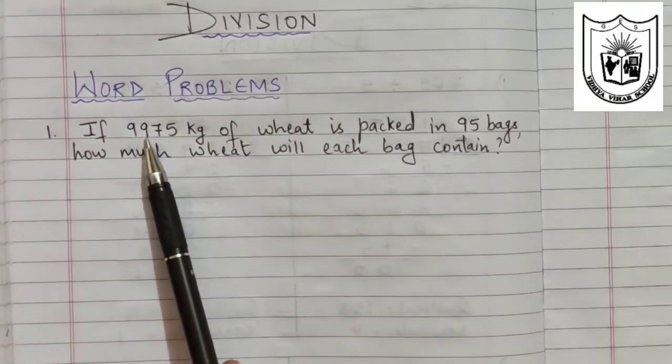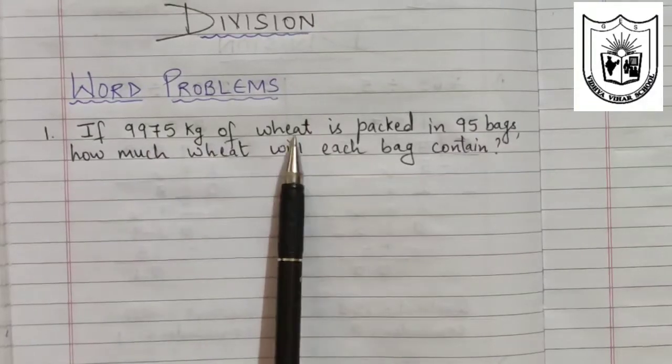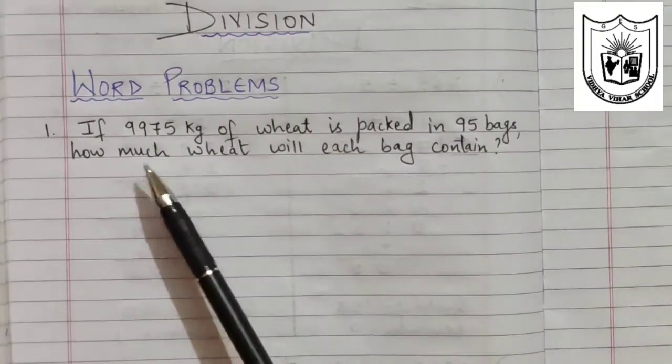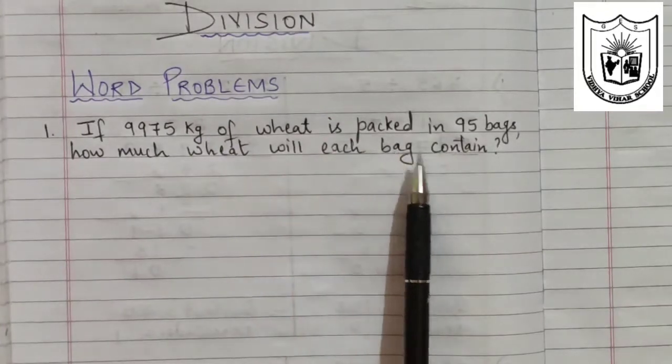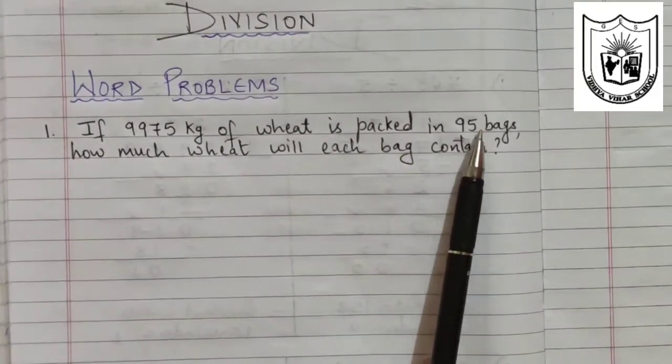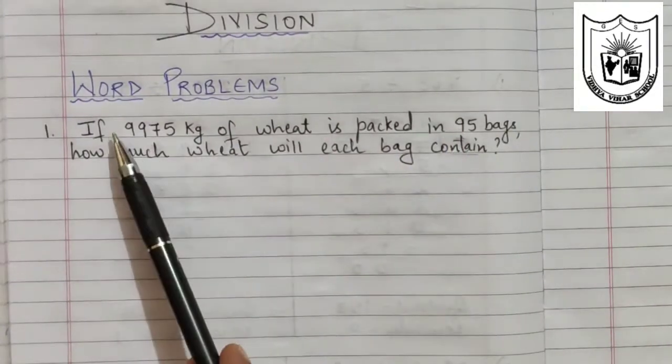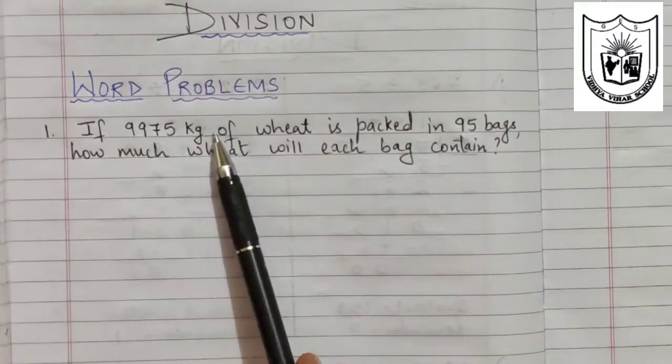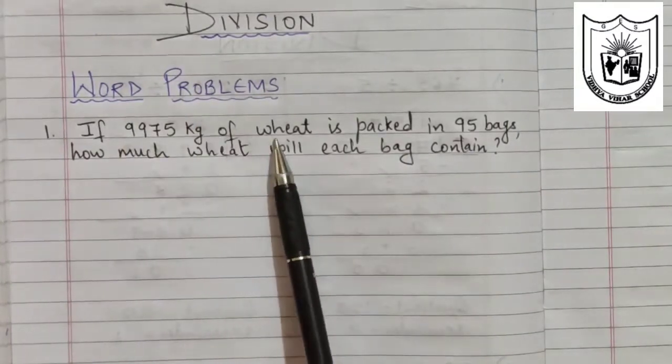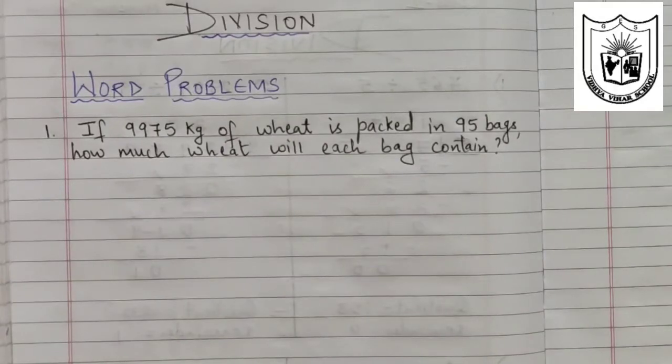If 9975 kg of wheat is packed in 95 bags, how much wheat will each bag contain? Which means if 95 bags contain this amount of wheat, then one bag will contain how much? So let us find.